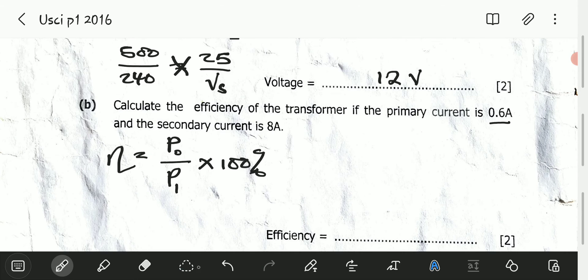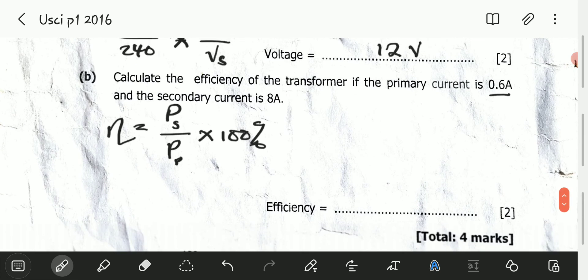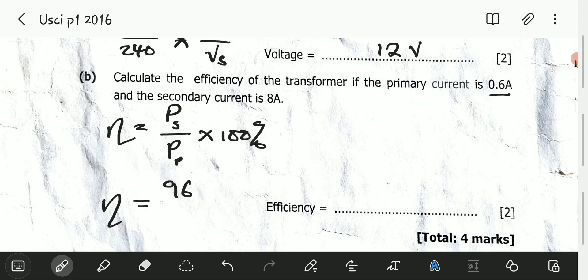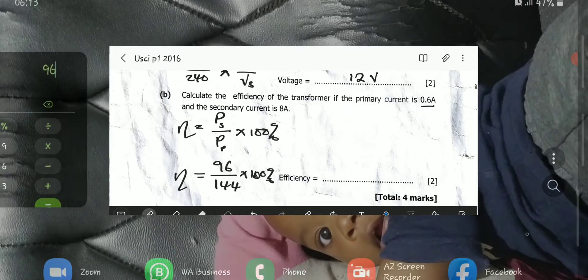We can say this is power in the secondary and this is power in the primary. Having all that, we can now say efficiency equals power in the secondary, which is 96, over power in the primary, which is 144, multiplied by 100%.